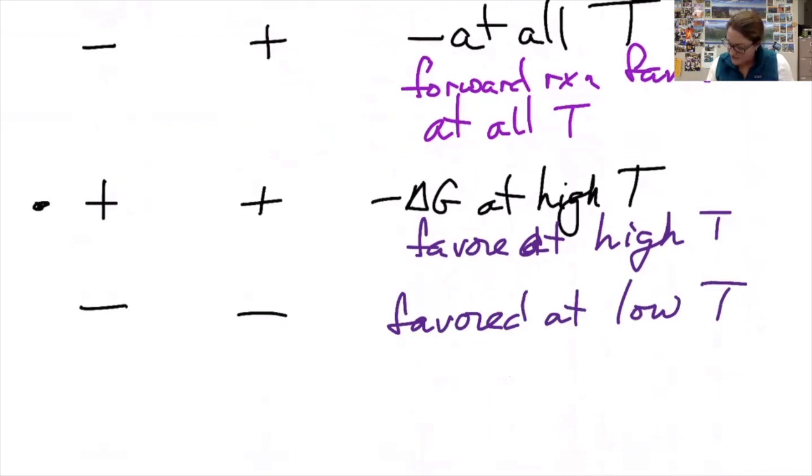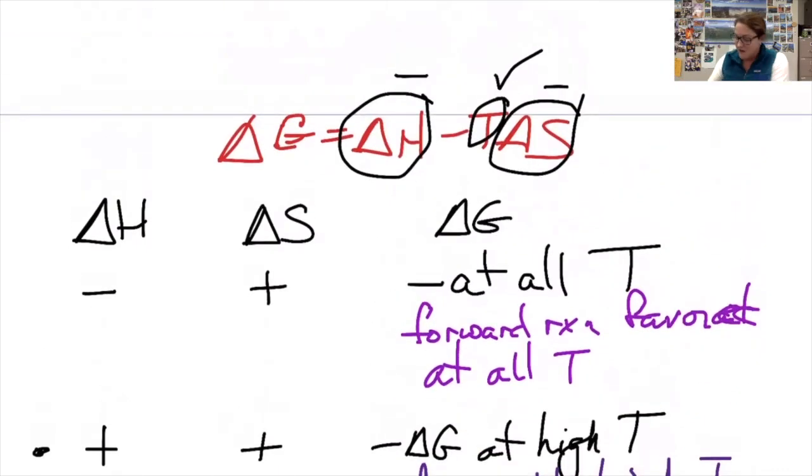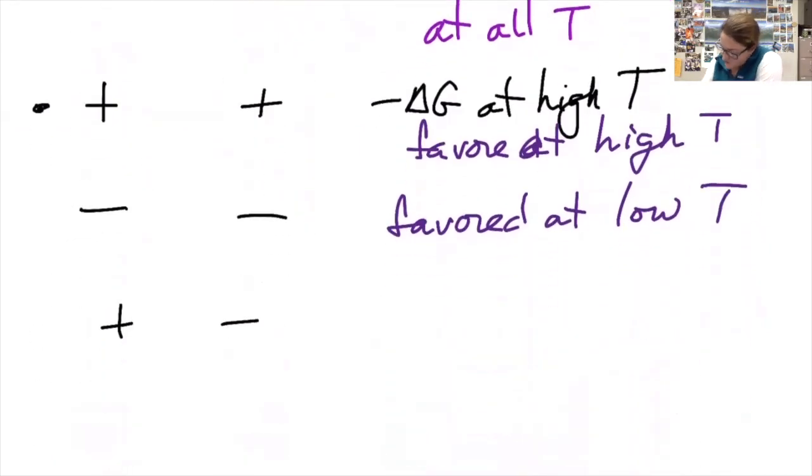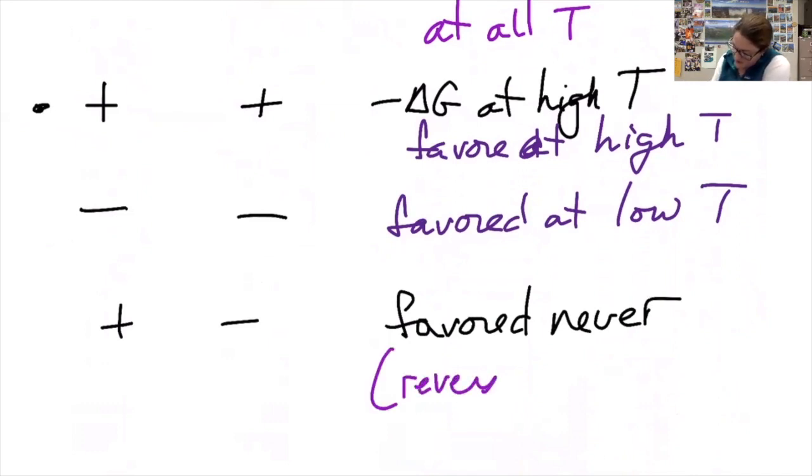The other option we haven't looked at is if this one's positive and that one's negative. If delta H is positive and I'm subtracting off a negative number, there is no possible way I can get delta G to be a negative value. So this reaction is favored at no temperatures. Conversely, the reverse reaction is favored.